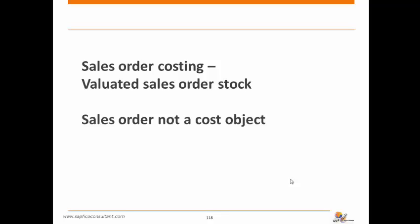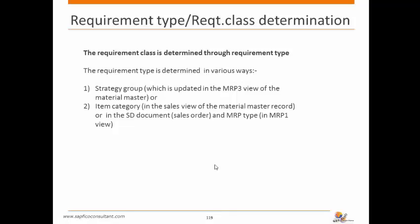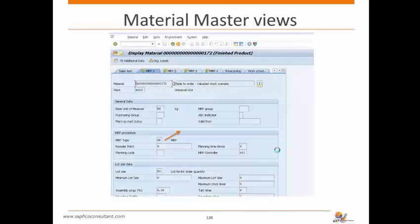In sales order costing with valued sales order stock, the sales order is not a cost object. The requirement class is determined by the requirement type, which is determined via the strategy group in the MRP3 view of the material master, or the item category in the sales view or SD document, and the MRP type in MRP1. In configuration, the MRP type and item category are linked to the requirement type, so the system automatically picks up the requirement type and determines the requirement class.